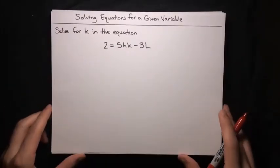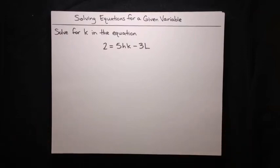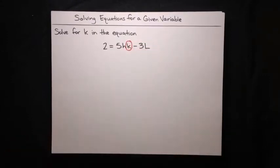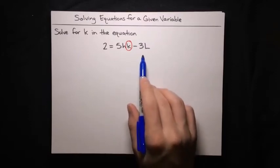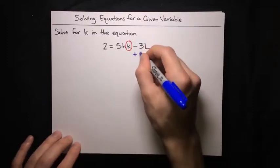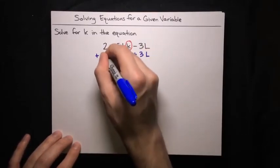Here's another problem. We want to solve for k in the equation 2 equals 5hk minus 3l. There are a lot more variables here than we're used to, but that's okay, because all we really care about is our primary variable, which is k. We'll just treat all the other variables just like numbers. To isolate k, we need to do two things: cancel out that minus 3l, and also cancel out that 5h that's multiplying the k. We always do addition and subtraction first, so let's focus on the minus 3l part — all we have to do is add 3l to both sides.